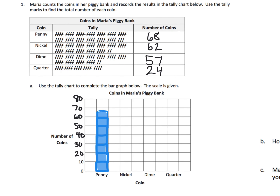For our nickels, we have 62. So that's 10, 20, 30, 40, 50, 60 — and now we have 62, two to go. That's going to be less than half of that box, so I'll just squeeze it in there. Because these aren't exact, I'm going to label this 62.